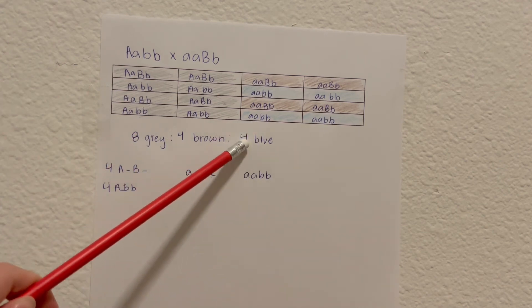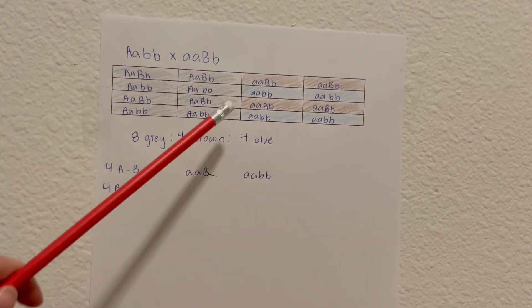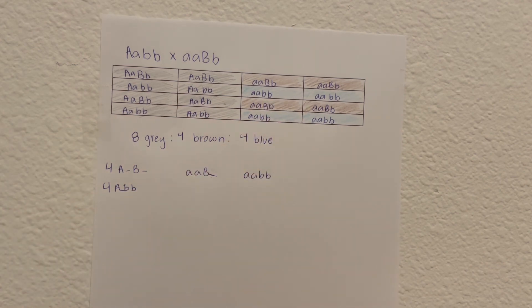And we also get four blue phenotypes for the sharks with the homozygous recessive for all four traits. And this cross will leave us with an 8 to 4 to 4 ratio.